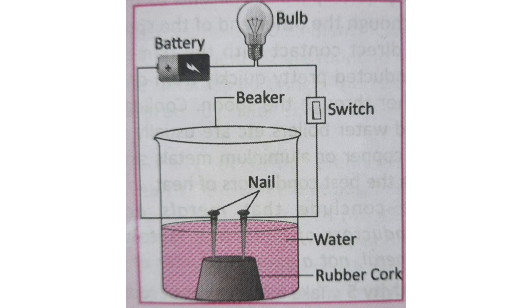There is an experiment by which we can elaborate this. It is one activity where you have to take a small rubber cork and fix two iron nails on it. Now place it inside a glass beaker. You have to pour some water on it and add one teaspoon of lime juice in the water. You have to stir it thoroughly. In the picture you can also see the arrangement.